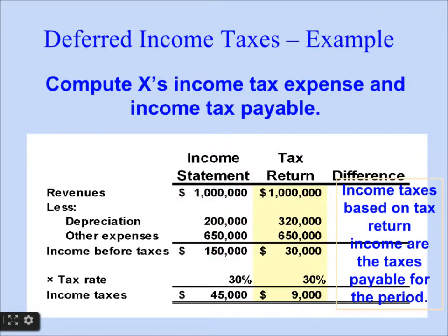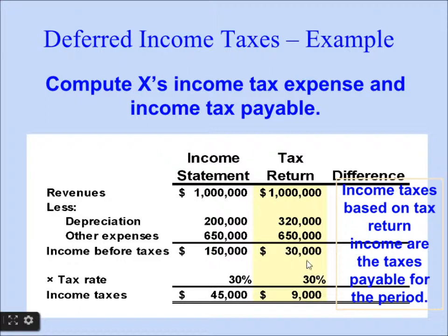For the tax return, the problem states they use accelerated depreciation of $320,000 and other expenses of $650,000. Deducting these from revenue of $1,000,000 gives income before taxes of $30,000. Applying the 30% tax rate: 30% of $30,000 is $9,000. So on the tax return, the tax payable is $9,000.